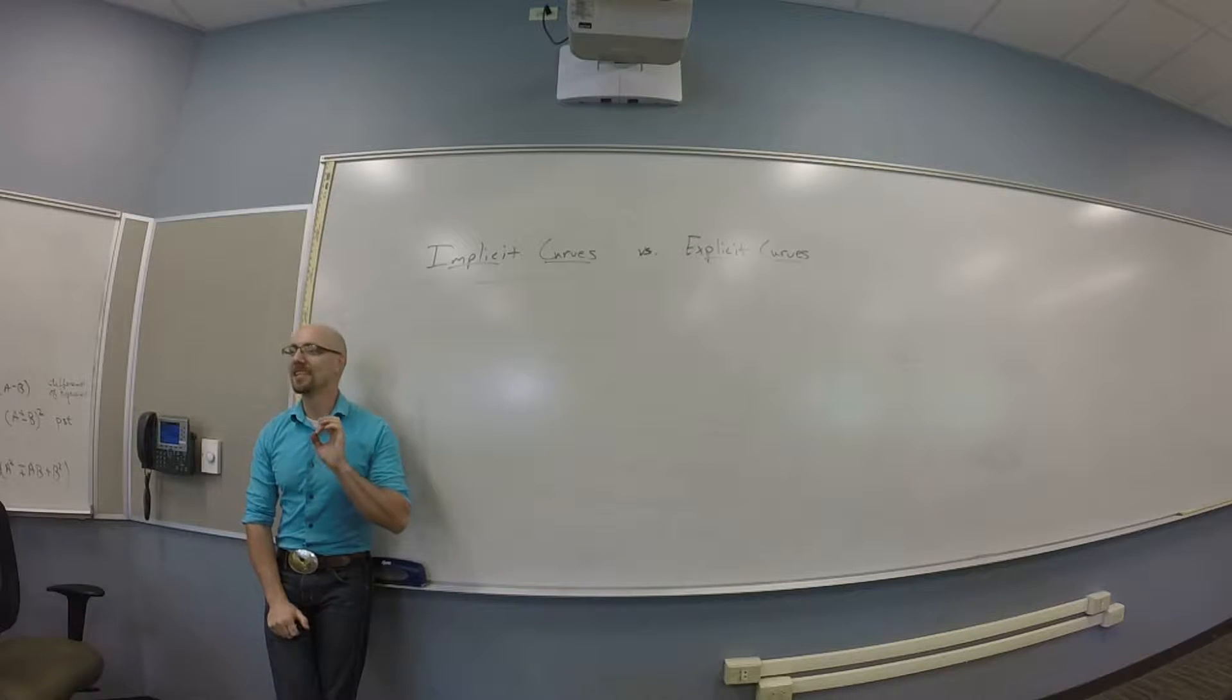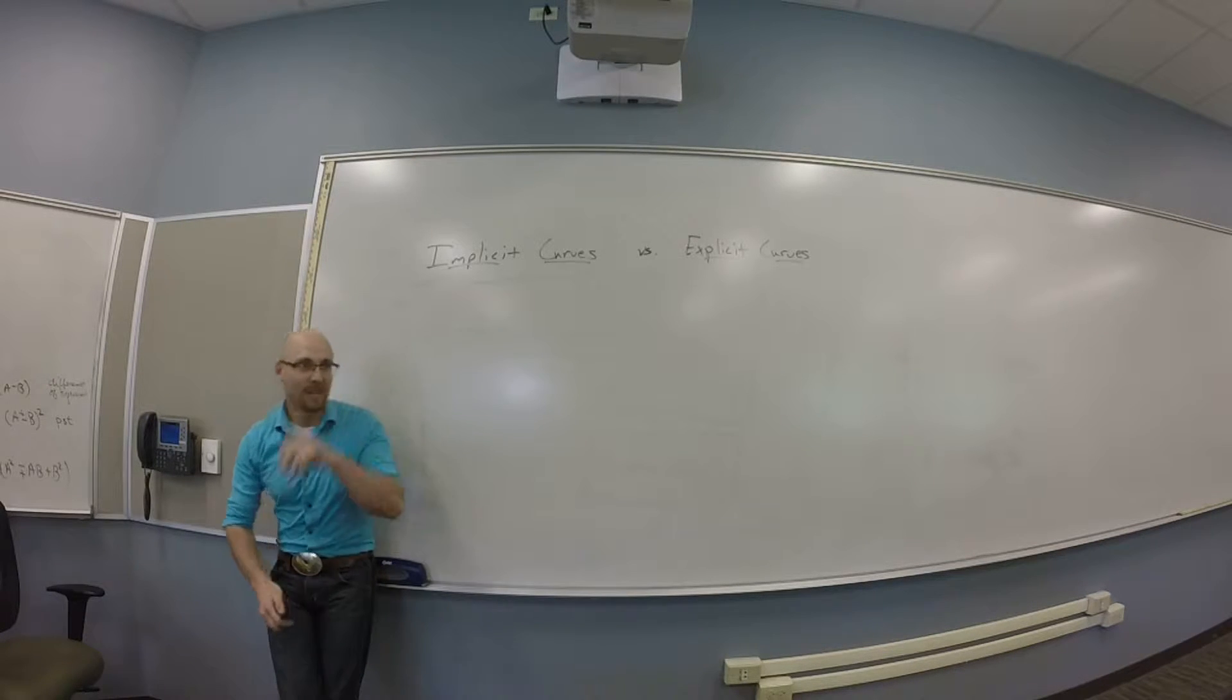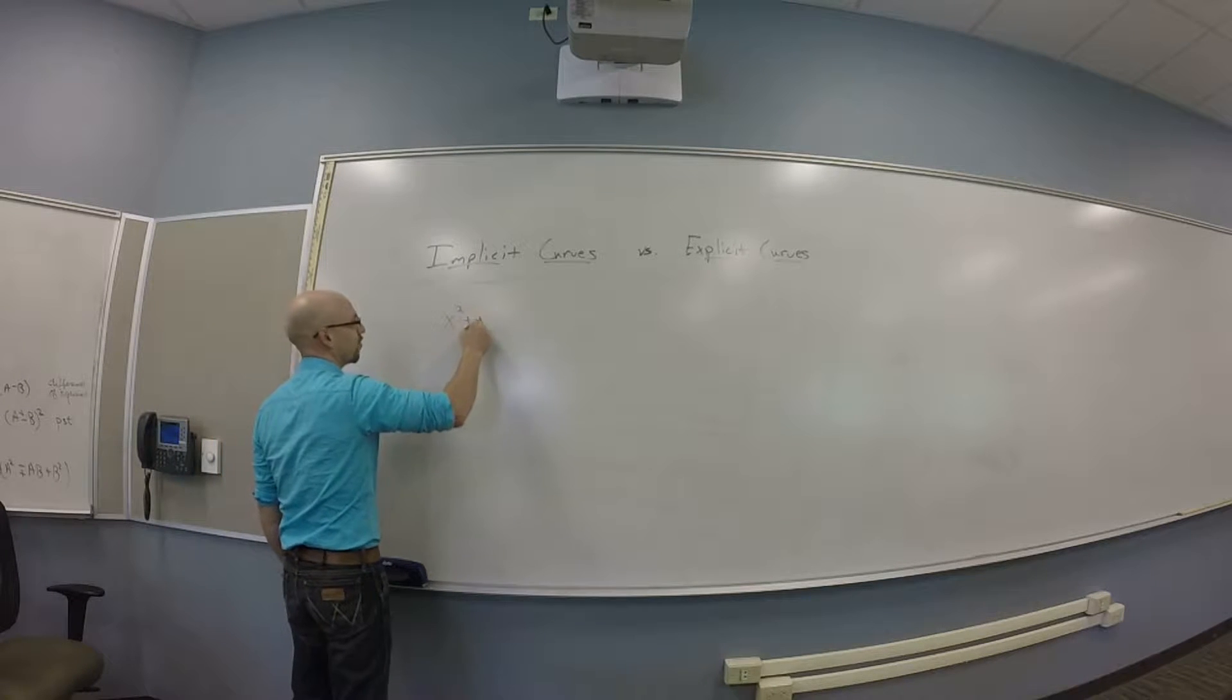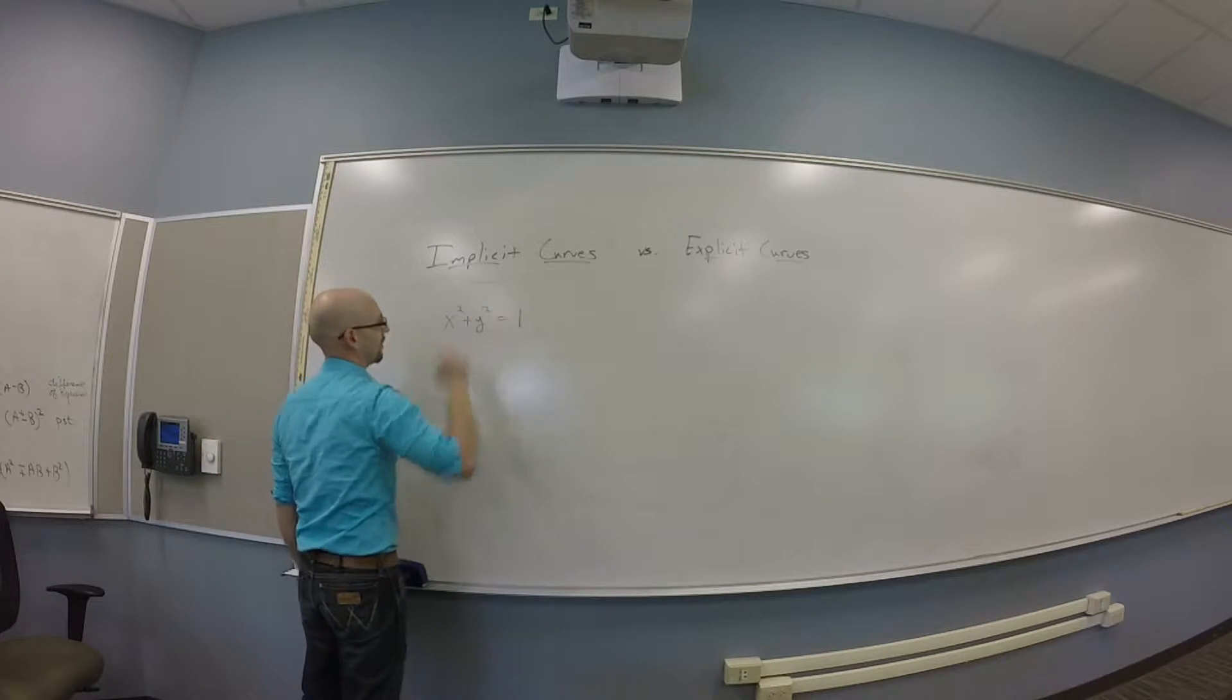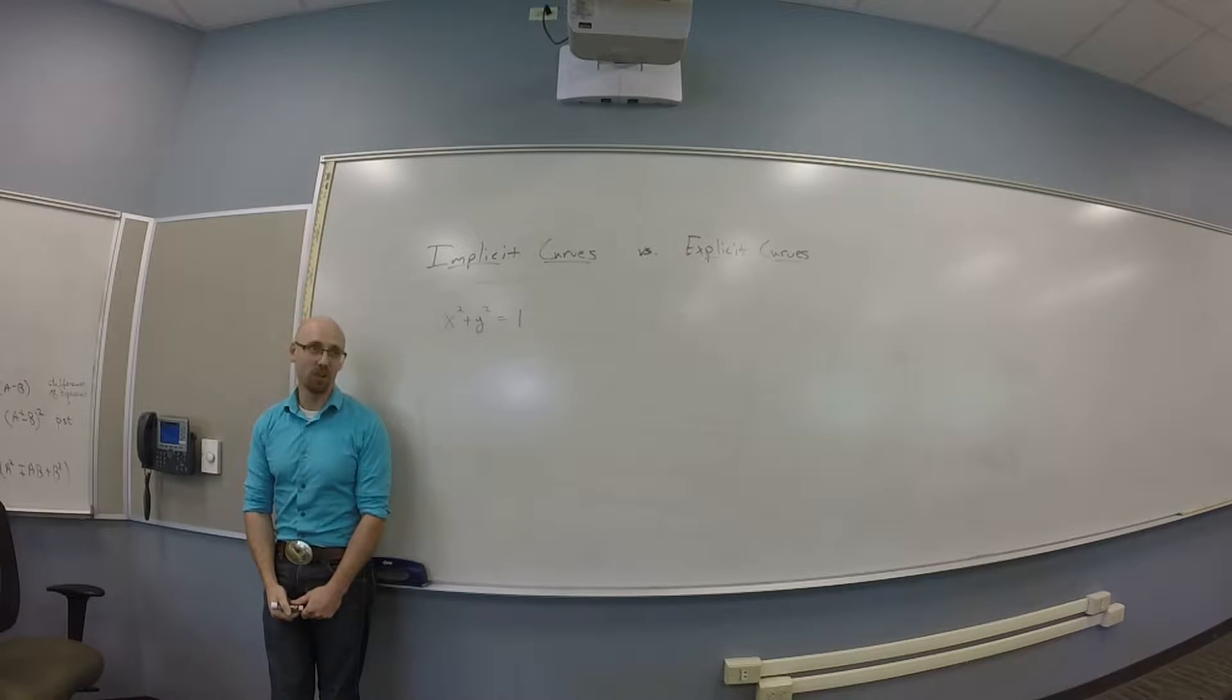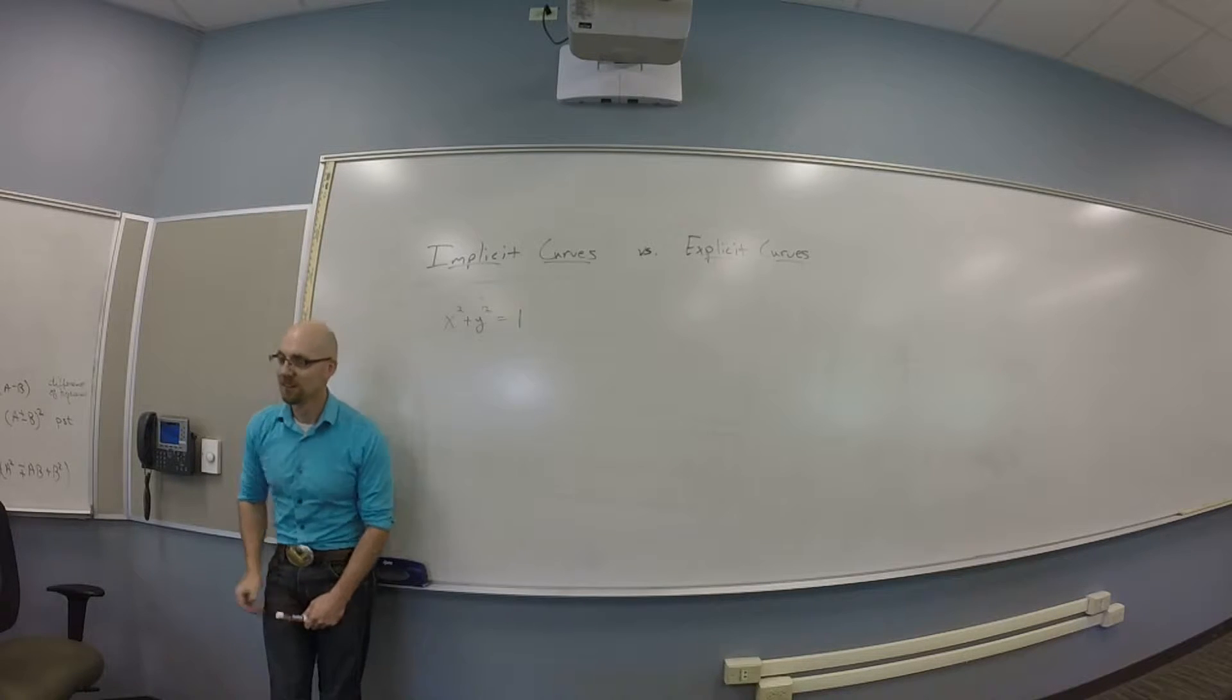What I mean by this is an implicit curve is something like x squared plus y squared is 1. Why this is implicit is that you can't solve for either of the variables in terms of the other.